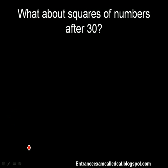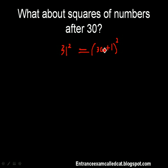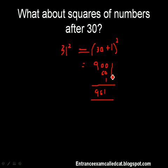What about squares of numbers after 30? Let us see this by example. 31 squared — you can write 31 as 30 plus 1, the whole square. This gives 900 plus 60 plus 1, using the formula a² + 2ab + b². The answer is 961. Always write it down in this structure because it becomes easier to add them up.